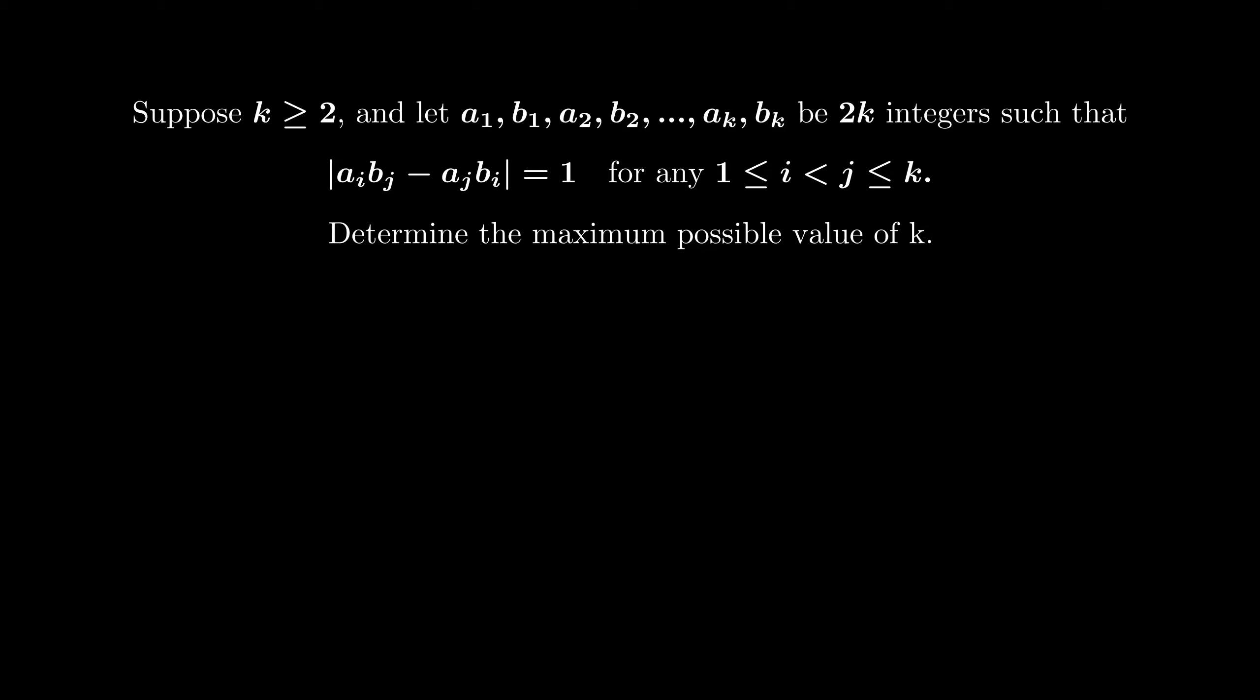As we are working with integers, it is natural to consider divisibility. The first thing that comes to my mind is that ai and aj need to be co-prime between them. This turns out to be useful information. So let me start with my solution.